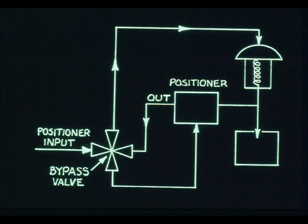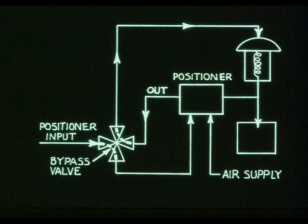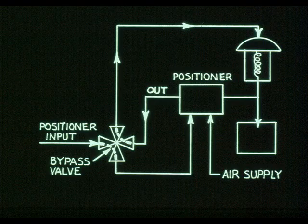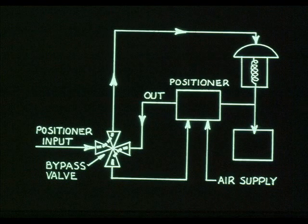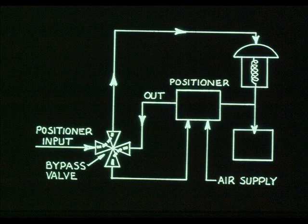Some valve positioners have a bypass valve. When the positioner is in service, the input is routed to the positioner bellows and the positioner output is routed to the actuator. When the positioner is bypassed, the input goes directly to the actuator, and the positioner relay, flapper nozzle, and other parts can be removed and repaired.